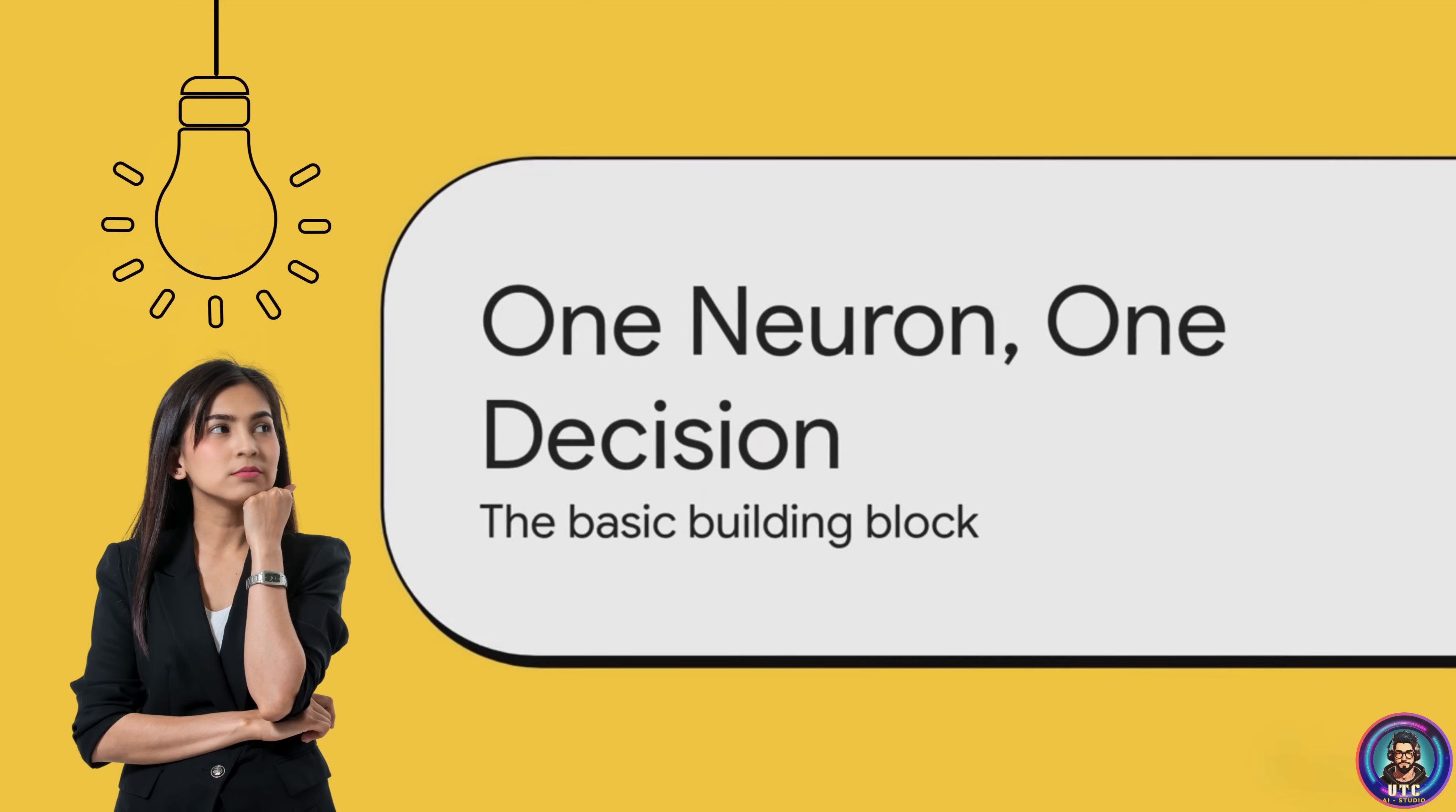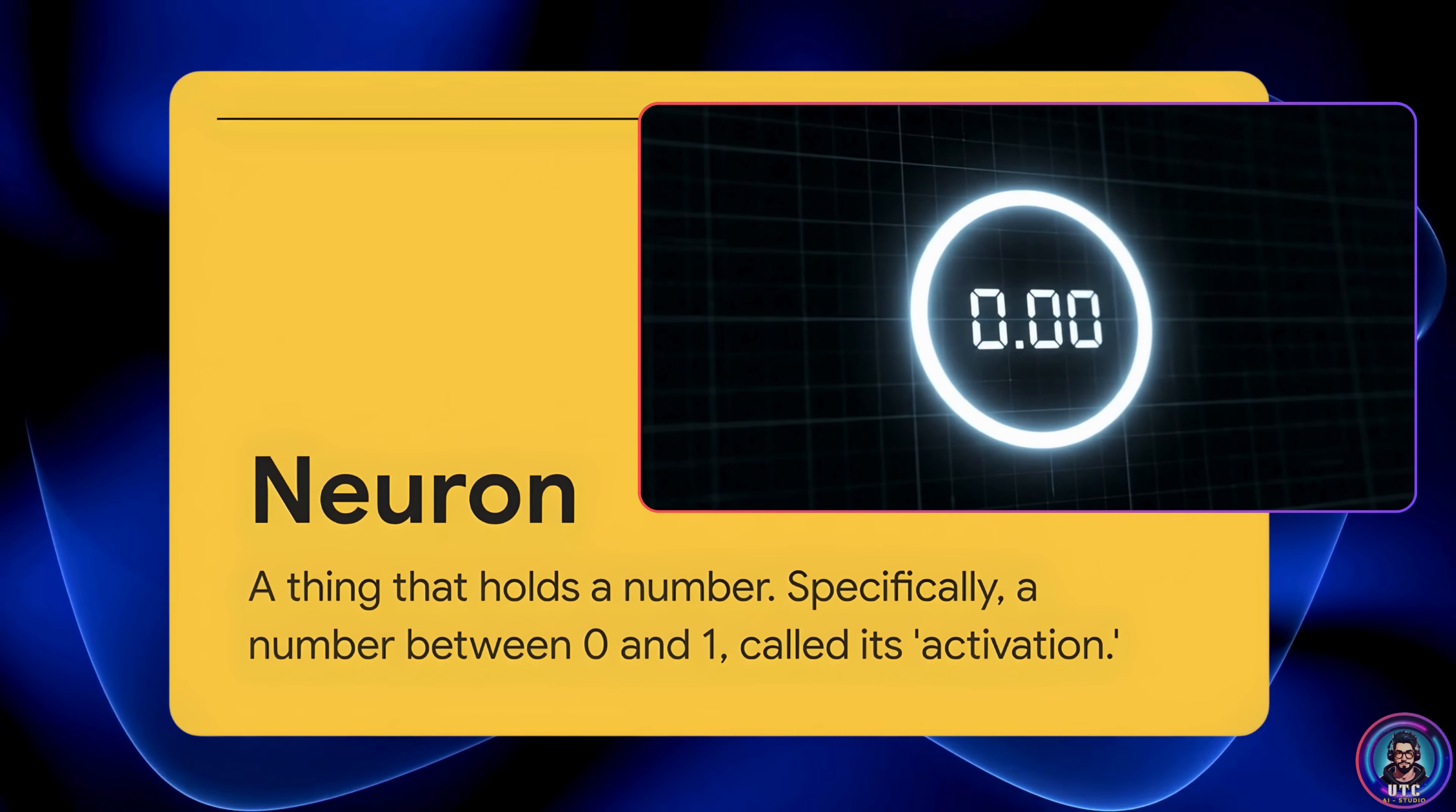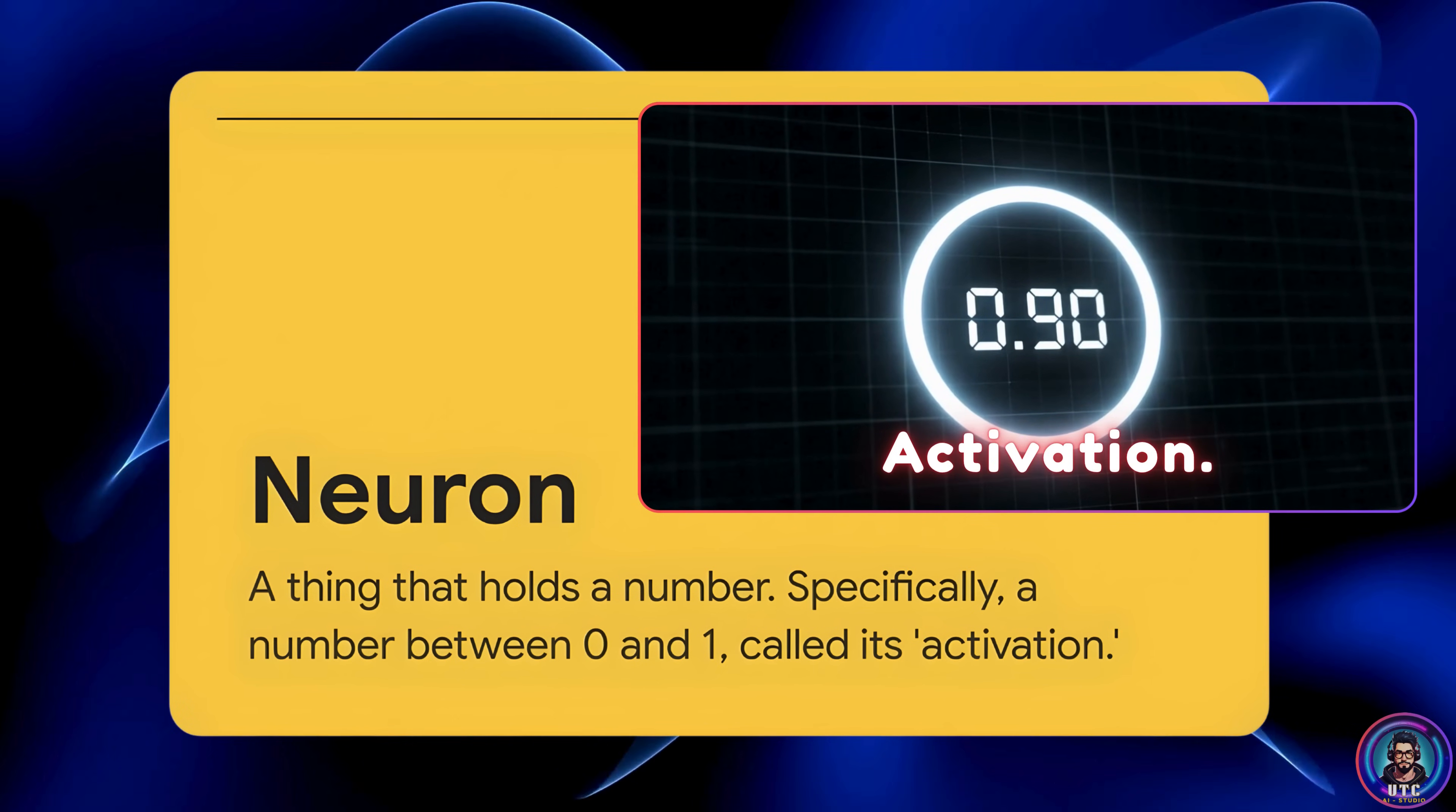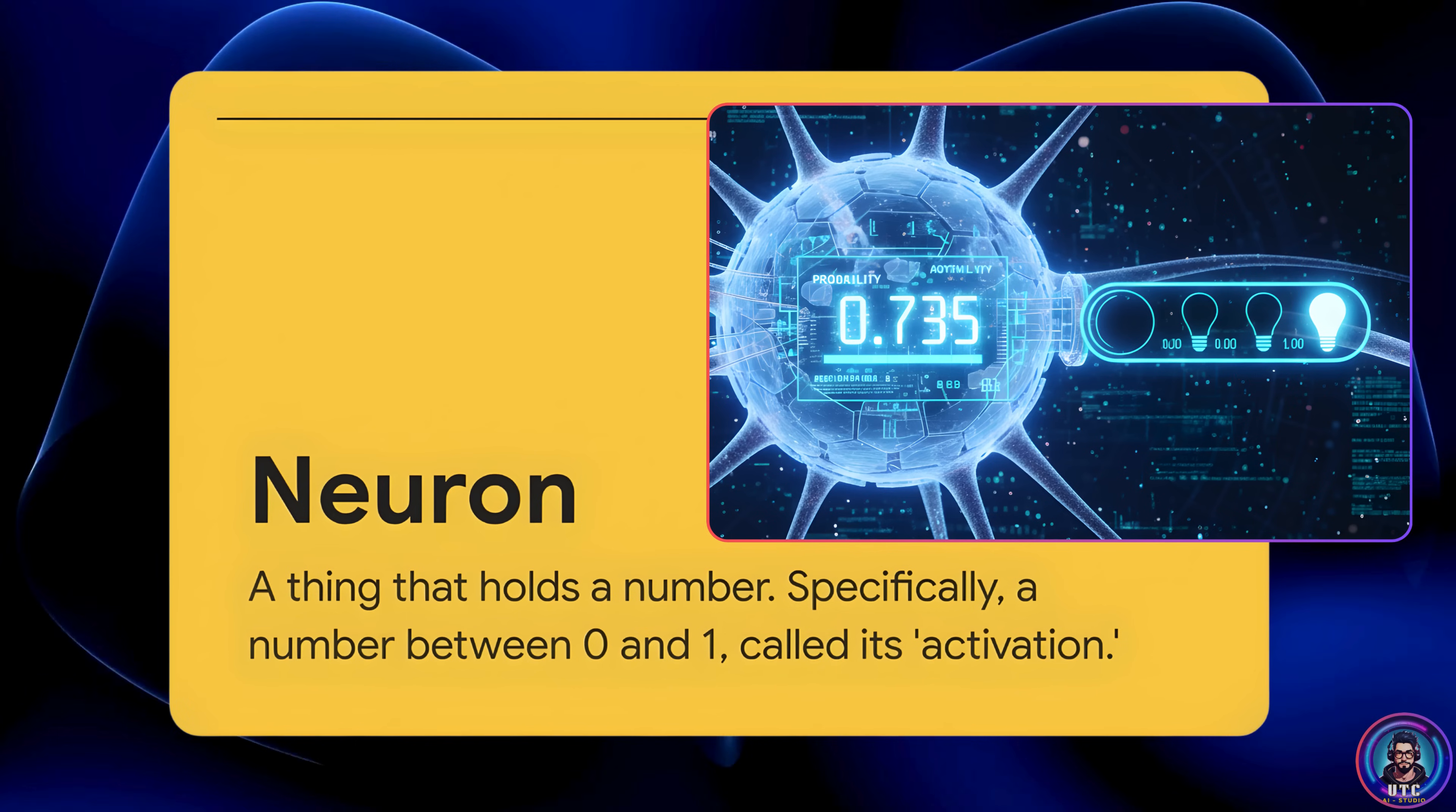All right, to really get how this whole thing works, we've got to start small. I mean, really small. We need to zoom all the way in and look at the most basic building block of the entire system. Just one single artificial neuron. First things first, when I say neuron, I don't want you to picture some complicated cell from your biology textbook. In our world, it's way simpler. A neuron is basically just a thing that holds a number. That's it. And specifically, it holds a number between 0 and 1. We call this activation. Think of it like a dimmer switch. 0 means the light is totally off and 1 means it's on at full blast. And anything in between is somewhere in between. Seriously, that's all a neuron is at its core.